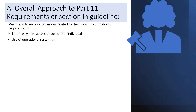Next is use of operational system checks. The user department is responsible for ensuring the system is operational and performance is satisfactory throughout the life cycle of the system. Operational checks may include but are not limited to monitoring system performance, ensuring compliance, maintaining reliability, and maintenance of the system.